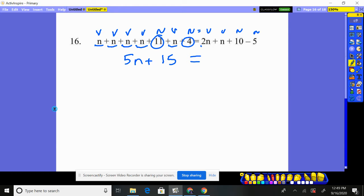Fifteen. Over here, I got two n and a single n, so that's just three n. Positive 10, lose five. That's a gain of five only.